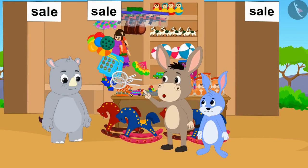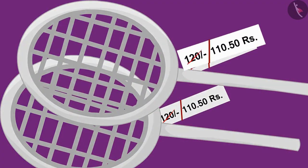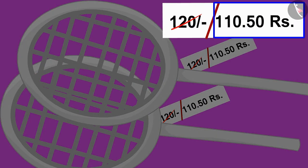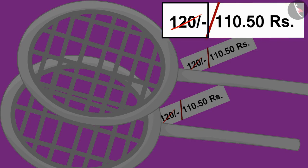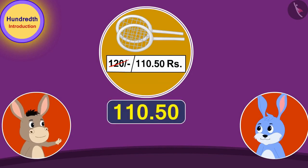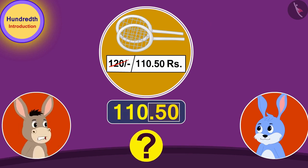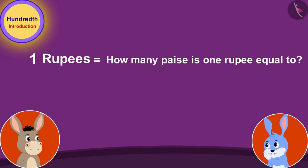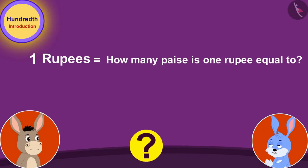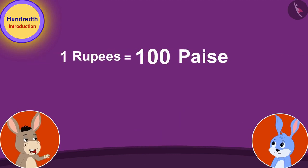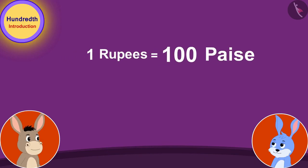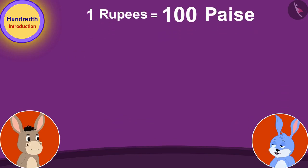Bhola wants to buy a new badminton racket. The new price, 110.50 rupees, has been written on the badminton racket by striking out the old price. Bunny, what kind of a price is this? I understood 110 rupees, but how will we give this 0.50 rupees? Bhola asked Bunny.